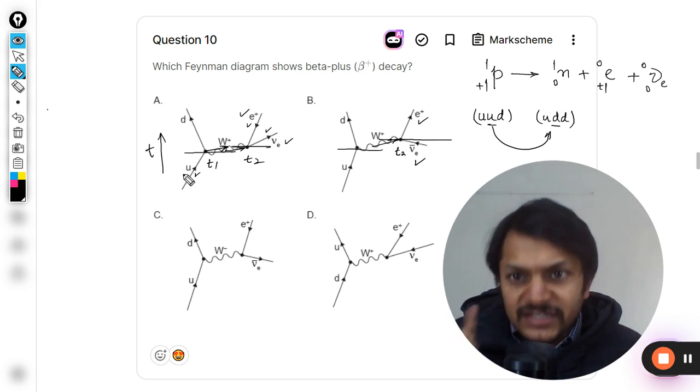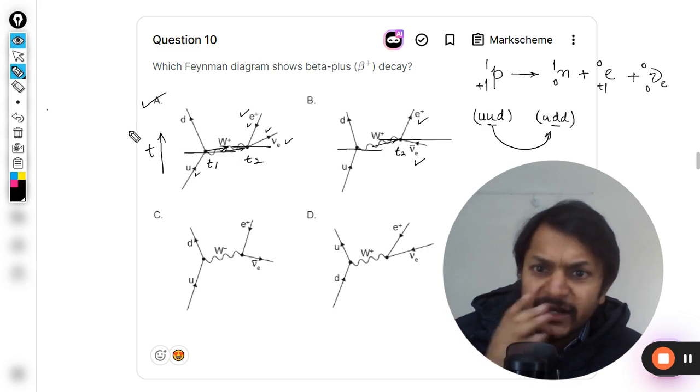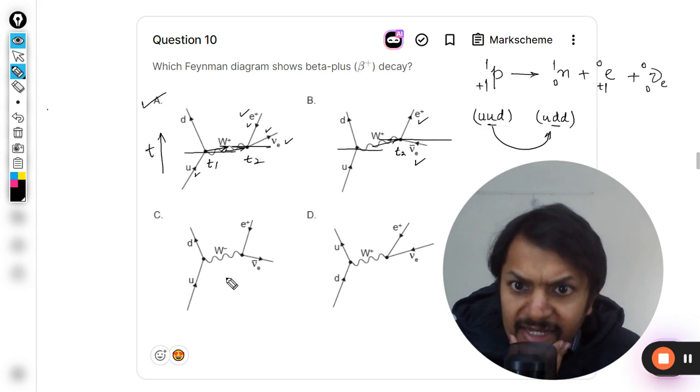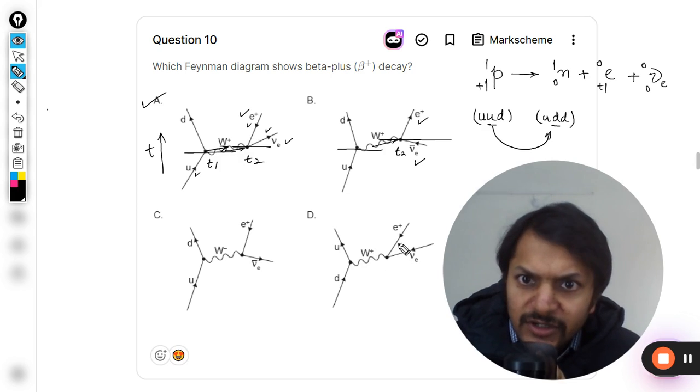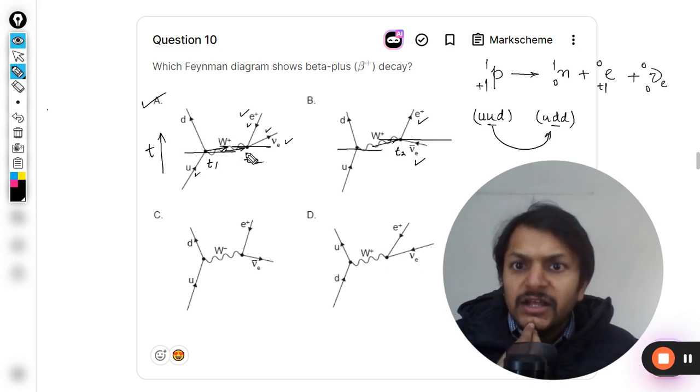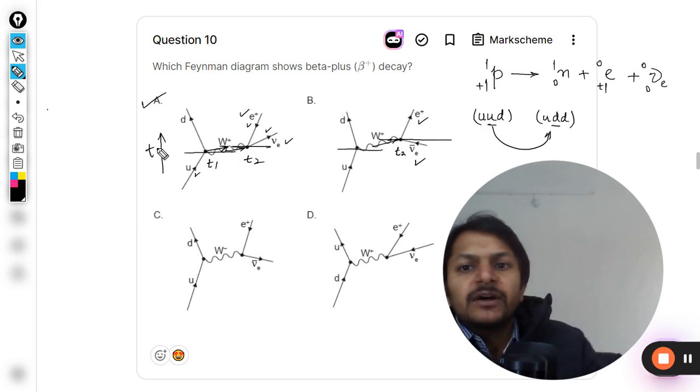I think A should be the correct answer. Yes, this is W positive, positron, and yeah, A will be the correct answer.